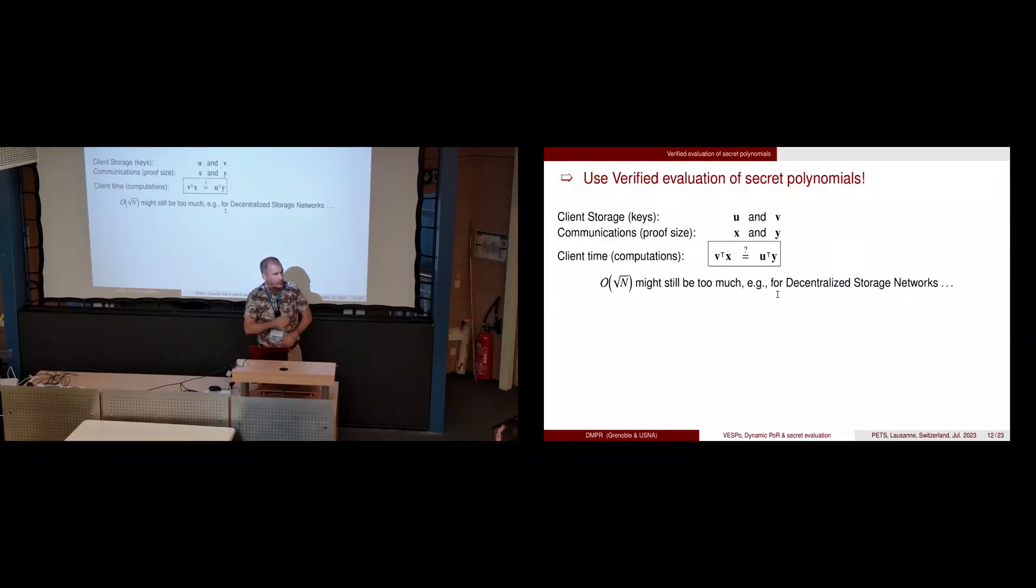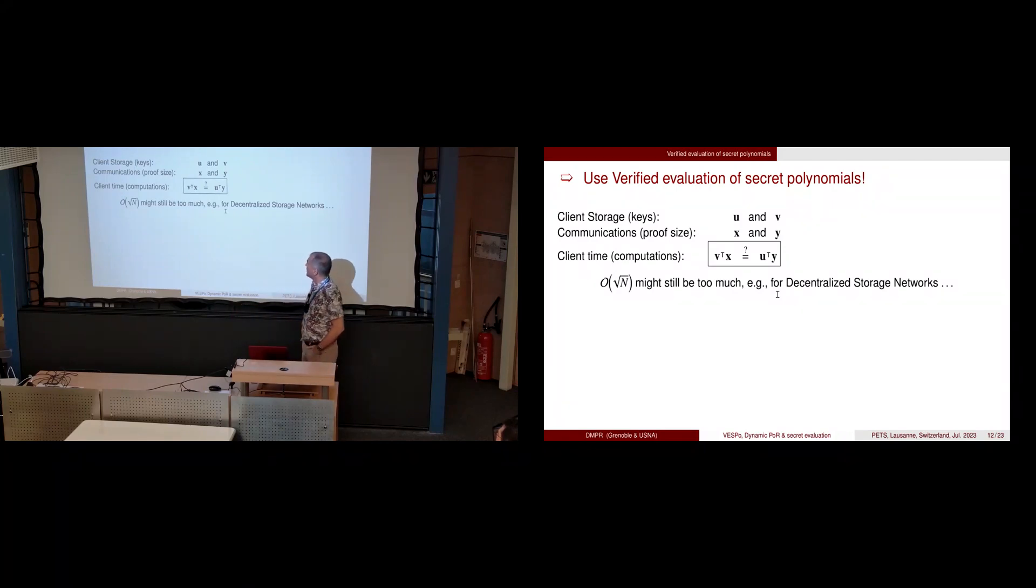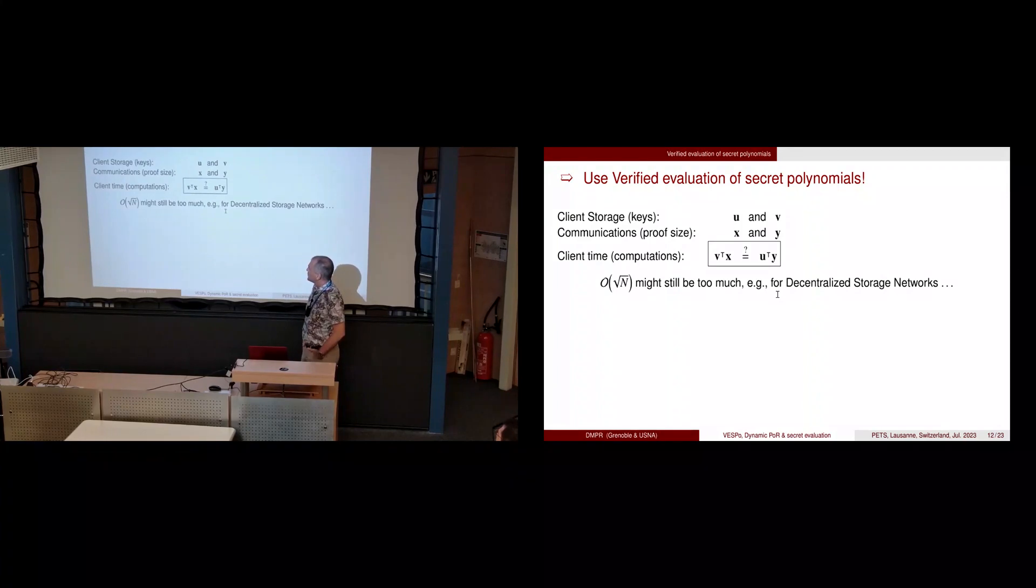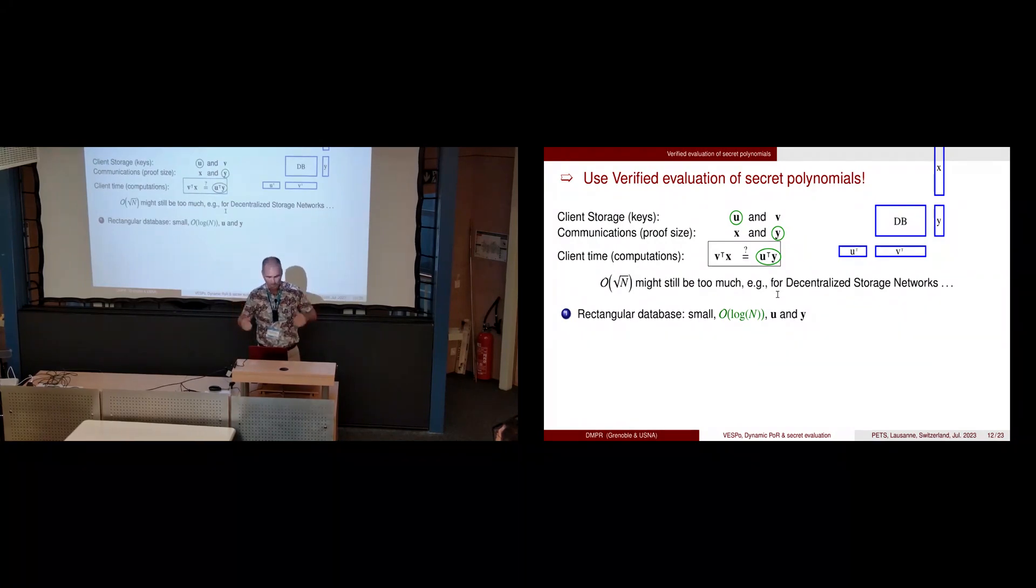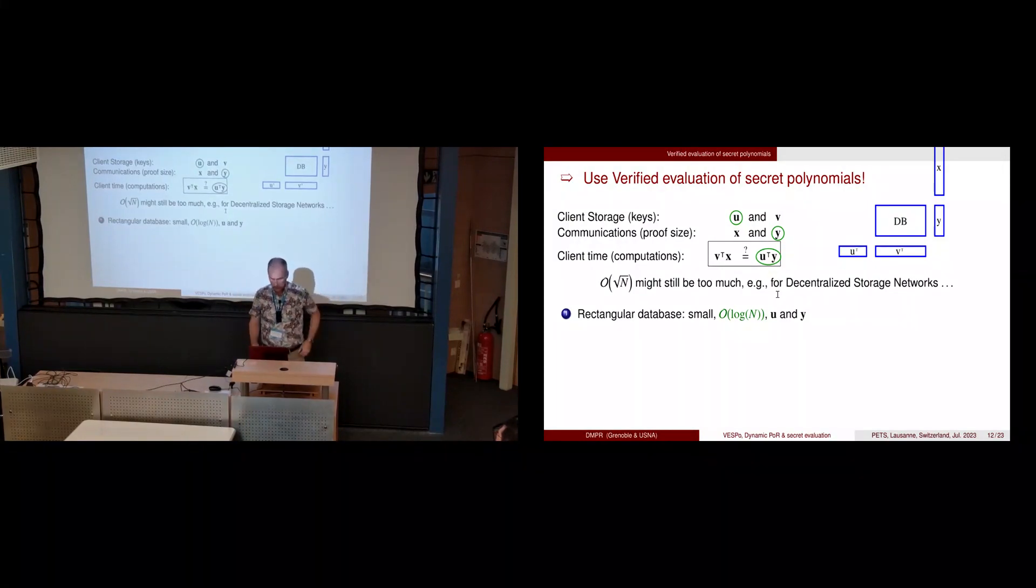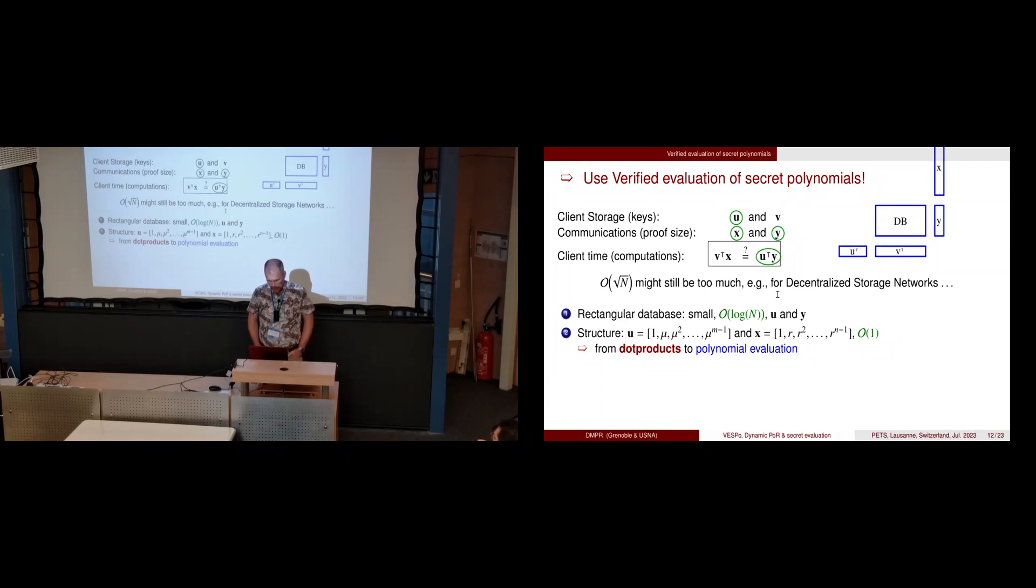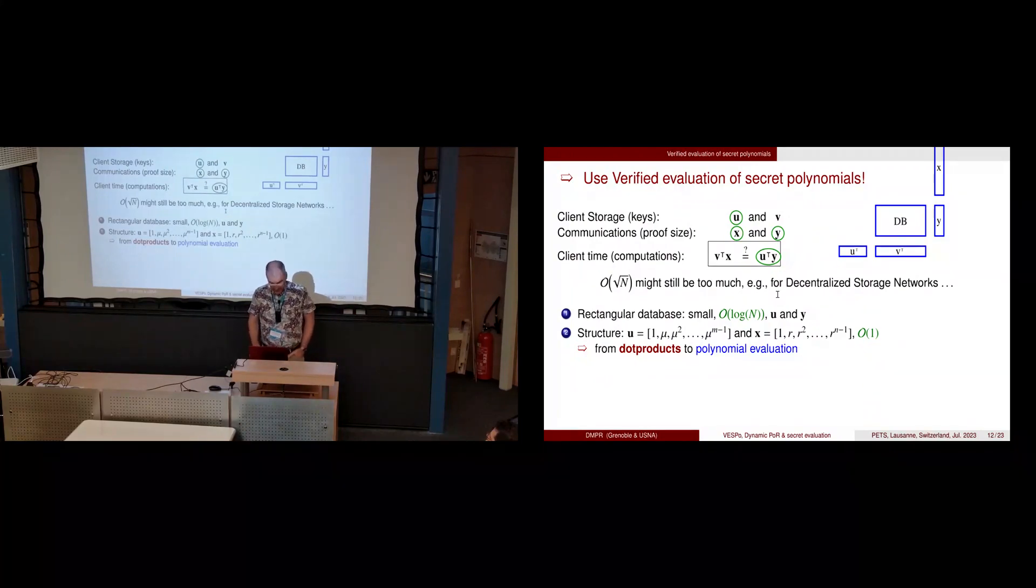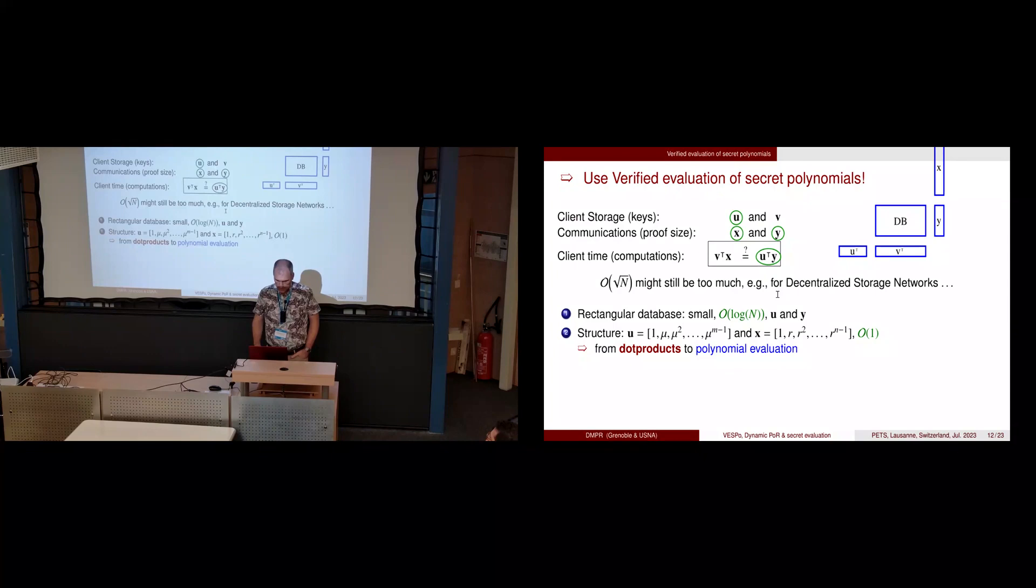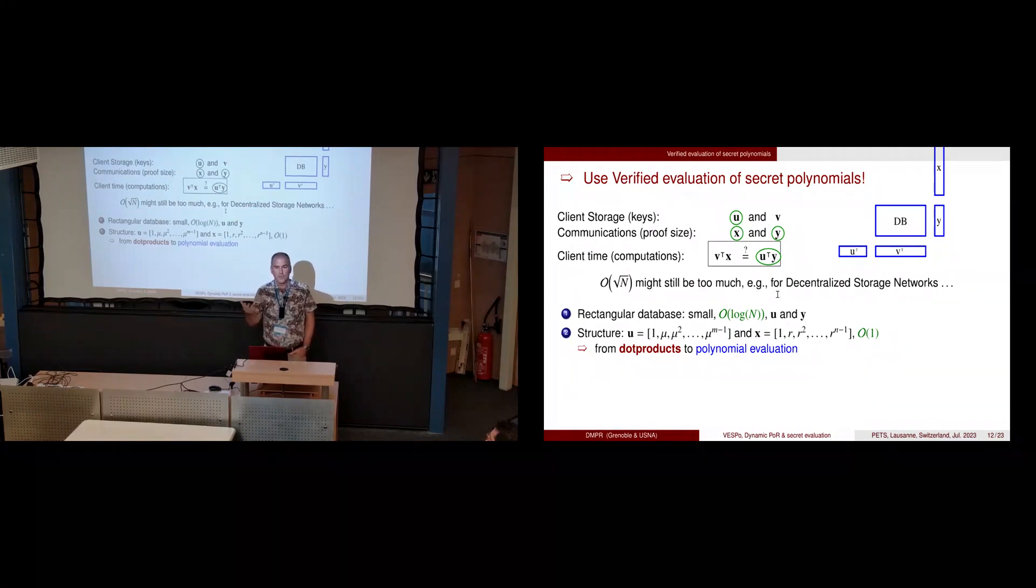We have many things that are of size square root of n because this is the optimum in our dot products. The first idea is to take a rectangular database instead of square. We can reduce some of the elements but the other ones grow much bigger. The other idea is to change the dot products into polynomial evaluation, using random geometric projections. There remains this v which is still large, so the idea is to outsource that also to the server but encrypt it so the server cannot cheat. Now the problem is how to evaluate a secret polynomial.